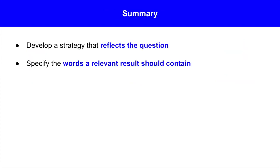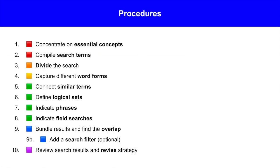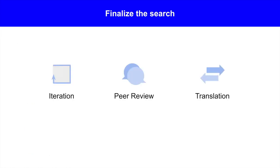In summary, to conduct a comprehensive literature search in a systematic review, develop a search strategy that reflects the question and specifies the words a relevant result should contain. Search strategy development is a design process comprising six building blocks. To assemble these elements into a strategy, follow the recommended procedures. To finalize the search, use iteration — testing and revising the strategy repeatedly — conduct peer review, and translate the strategy when proceeding to a new database.